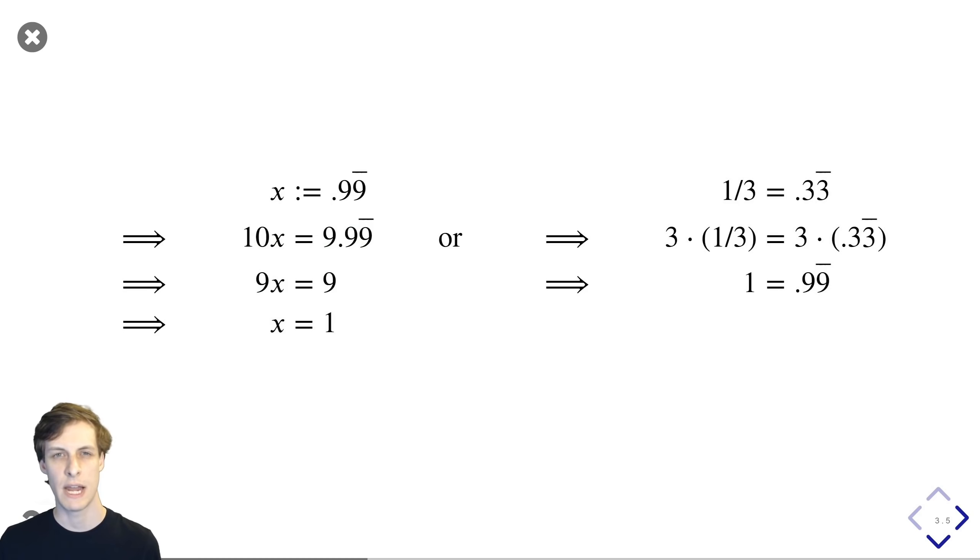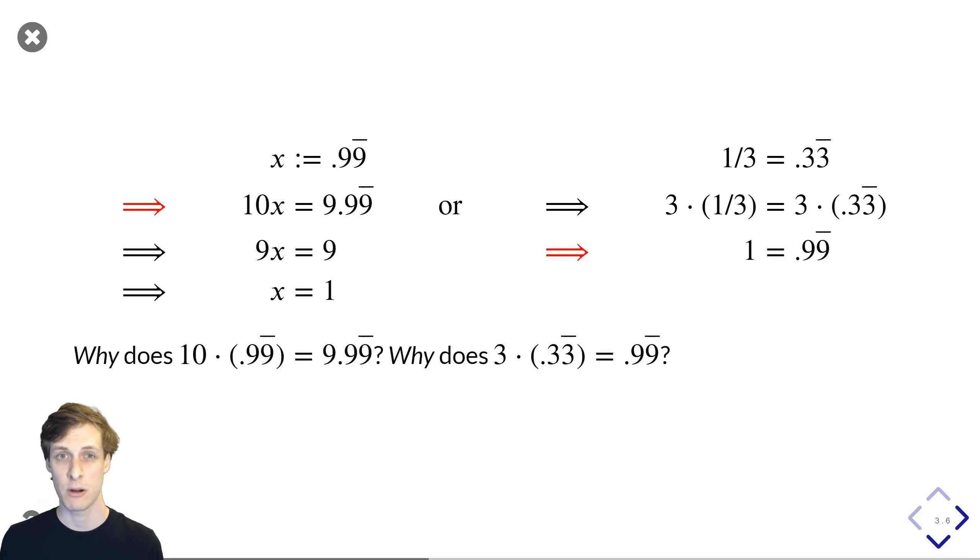So in this slide, I'm using this implies arrow to indicate that each line implies the next line. I claim that the issue with these proofs lies in these arrows, not in the statements themselves. These red arrows specifically.